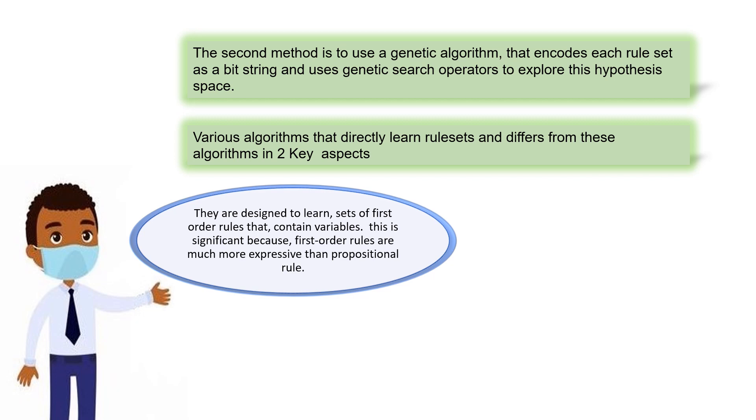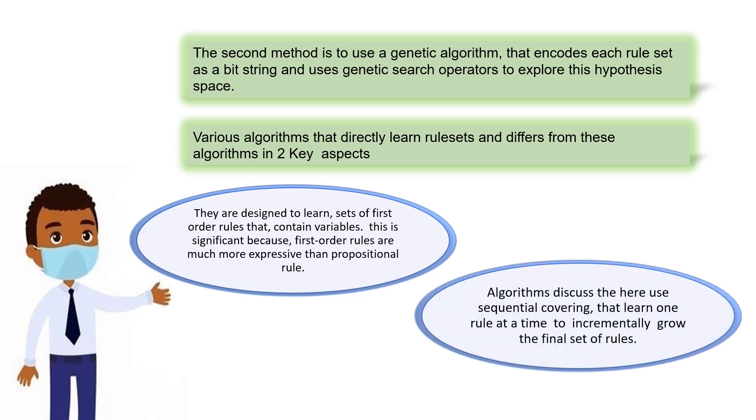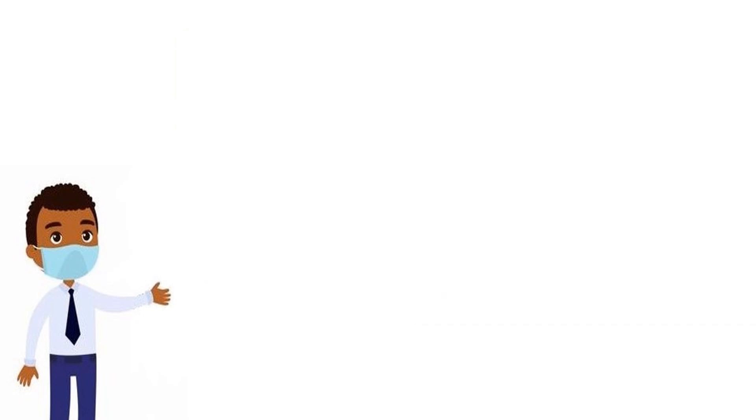Algorithms discussed here use sequential covering that learns one rule at a time to incrementally grow the final set of rules. Let's see an example of first-order rule set. Consider two rules that jointly describe the target concept ancestor.